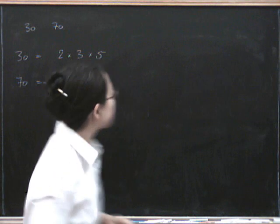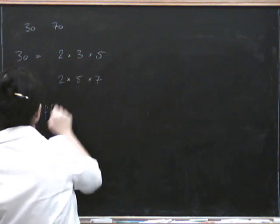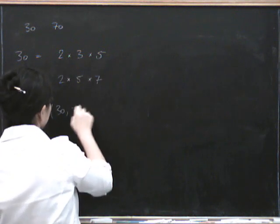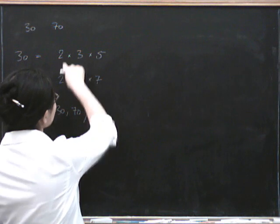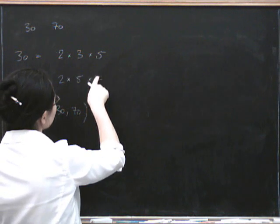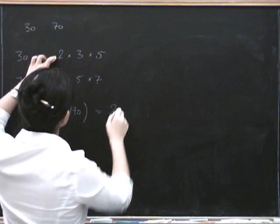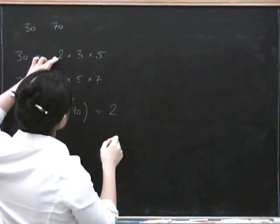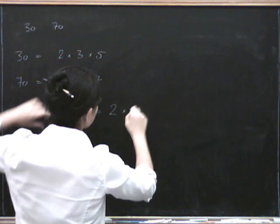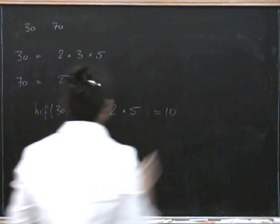Now the highest common factor is probably a bit more obvious. For the highest common factor of 30 and 70, you find all the prime factors that they have in common. They've definitely got a 2 in common and they've definitely got a 5 in common, and that's all. So the highest common factor is 10.